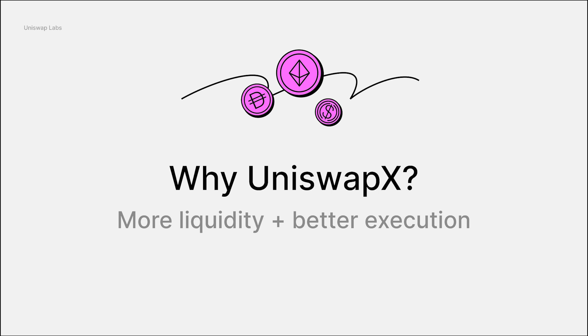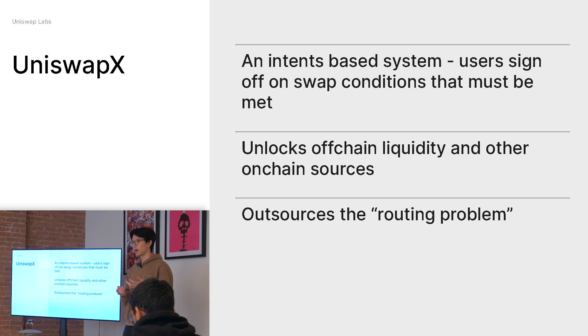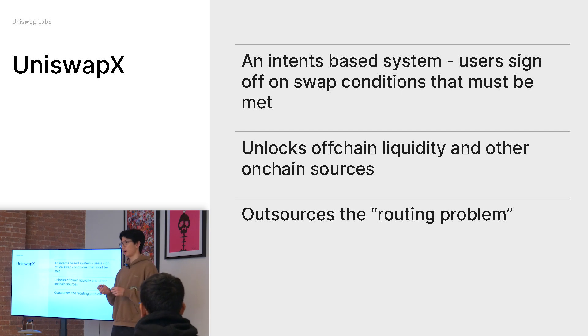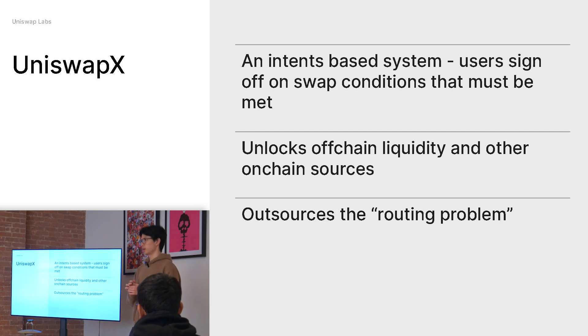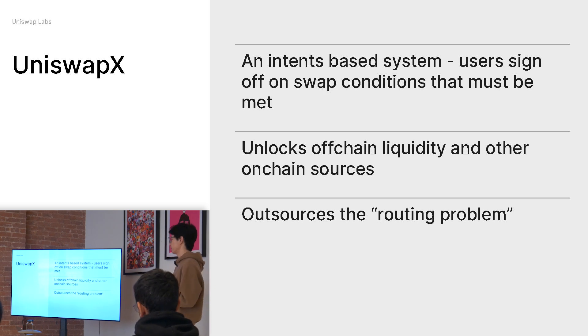So this is where Uniswap X comes in. The main driver is we want to give users more liquidity and better execution. Uniswap X is an intent-based protocol — users are signing off on some swap conditions that must be met for the order to be filled. This is similar to a classic swap where the user signs off on what pools the swap has to go through and how much they have to get out. And Uniswap X unlocks off-chain liquidity and other on-chain sources.